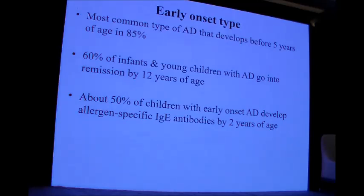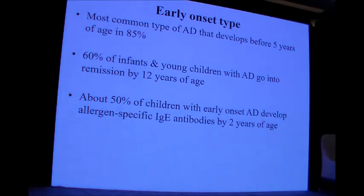The early onset type is our main concern. It is the most common type, developing before five years of age in about 85% of children. 60% of infants and young children with atopic dermatitis go into remission by age 12, and about 50% develop allergen-specific IgE antibodies by the age of two years.